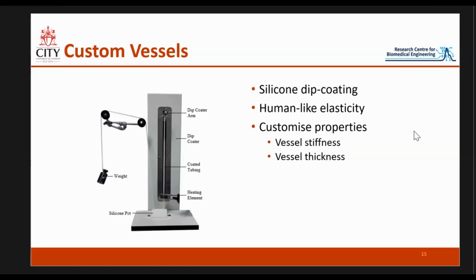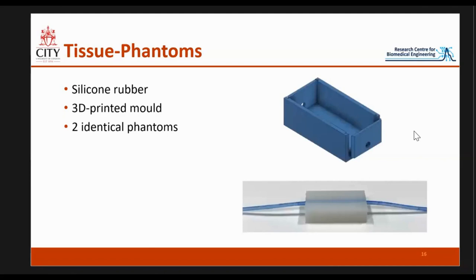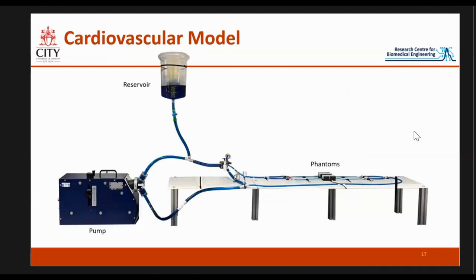We can customize the properties by adjusting the silicone mixture — depending on what additives we add, we can change the stiffness. We can also adjust the timing and heating to change the vessel thickness. We then need to put the vessel into a phantom. For this we use more silicone, this time in a mold — we put the vessel through, add silicone around it and allow it to cure. The goal was to create two identical phantoms with the same vessel and tissue mixture, and attach them to the system.